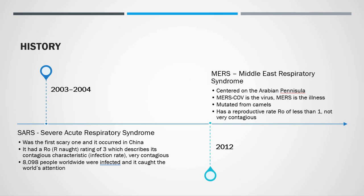In 2012, it was MERS — Middle East Respiratory Syndrome. It was centered on the Arabian Peninsula. MERS-CoV is the virus; MERS is the illness. It was mutated from camels. It has a reproductive rate, R-naught, of less than 1. It was not very contagious.